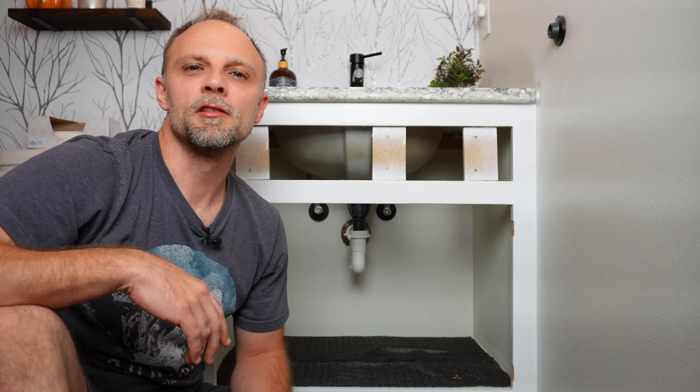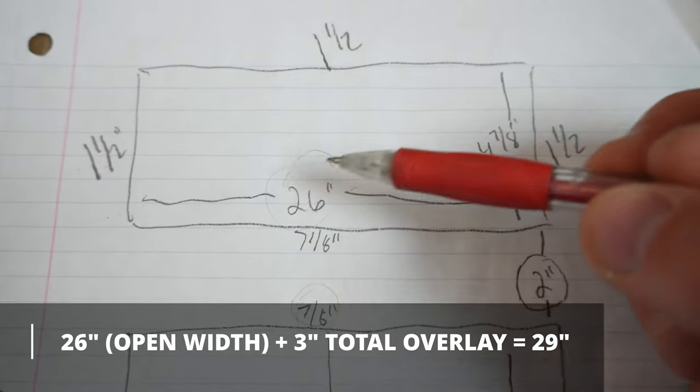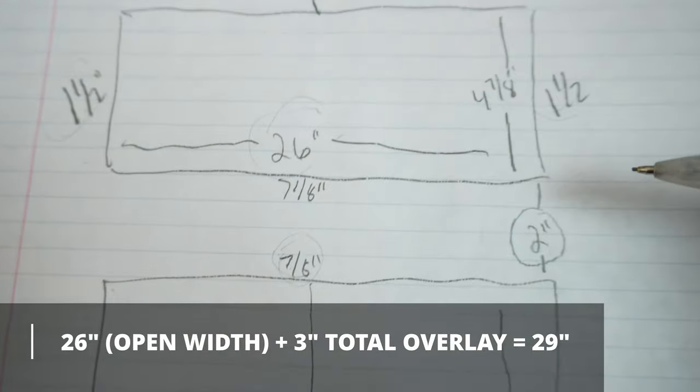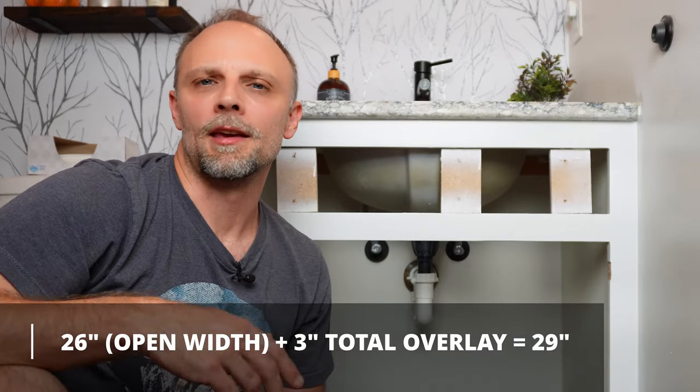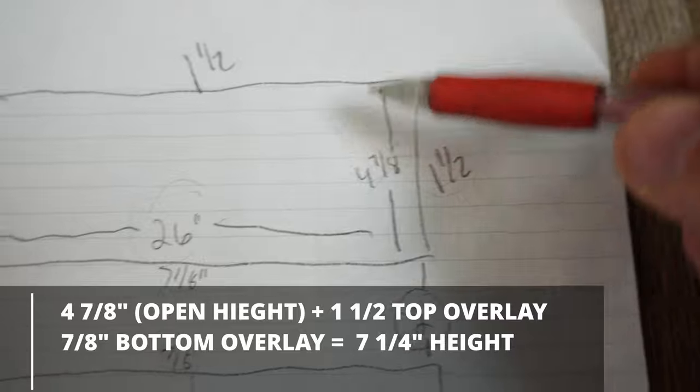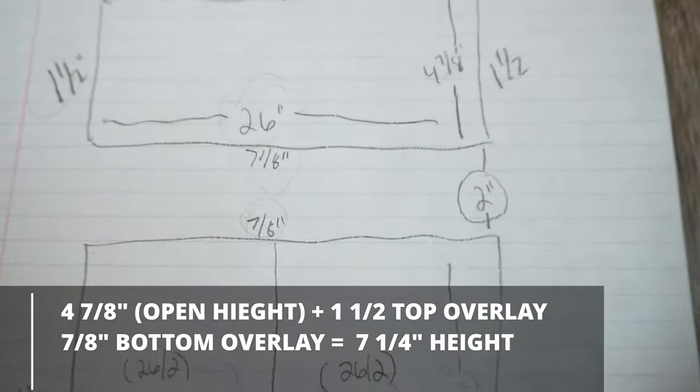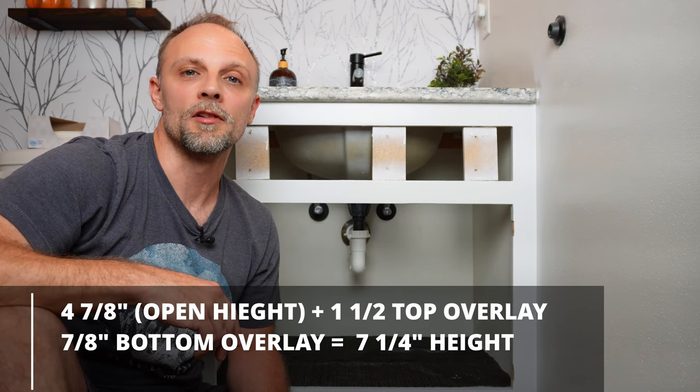Now let's figure out the measurements for the false drawer front. It's basically the same concept as the cabinet doors. We'll take our opening width of 26 inches plus an inch and a half overlay on the left and an inch and a half overlay on the right, which comes out to a total of 29 inches wide. And for our height, we'll take the height of the opening at 4 and 7/8 of an inch plus the top overlay of one and a half inches plus the bottom overlay of 7/8 inch, which equals 7 and 1/4 of an inch. So now we've determined the width and the height of the false drawer front to be 29 by 7 and 1/4 of an inch.